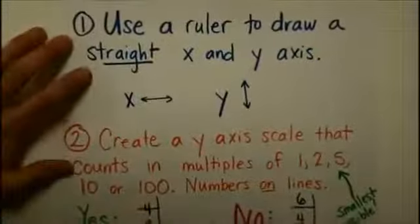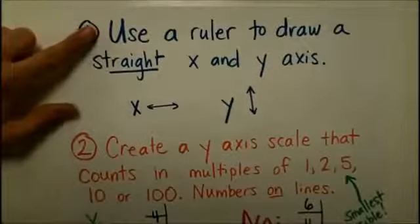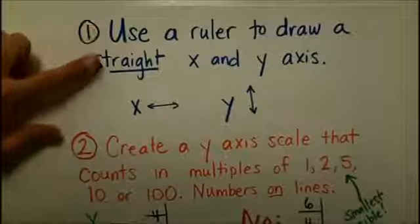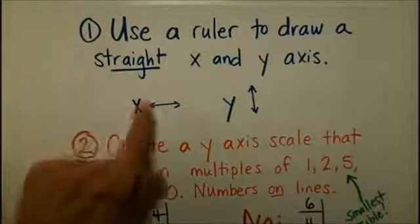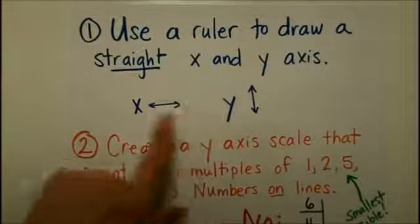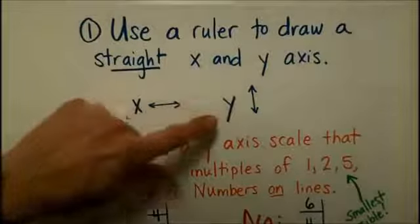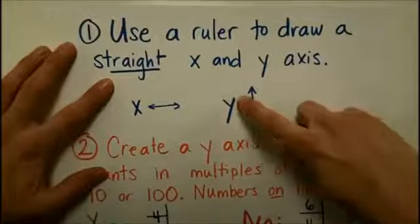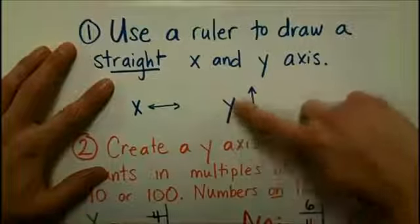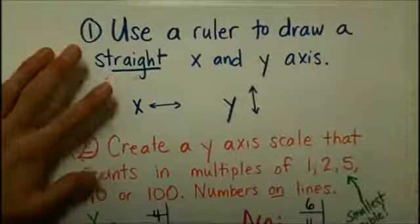Now let's talk about the steps for creating an awesome bar graph. First of all, you're going to use a ruler to draw a straight x and y axis. Remember that the x axis is the horizontal axis and the y axis is the vertical axis. I remember that because the tail of the y is long and goes up and down like the y axis.